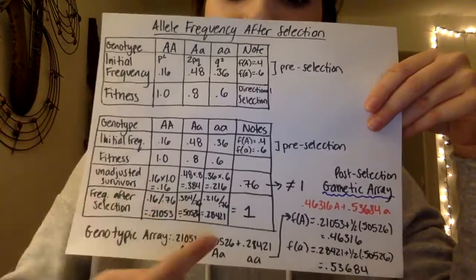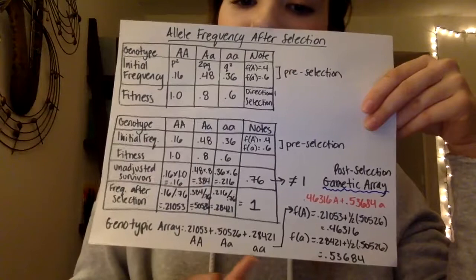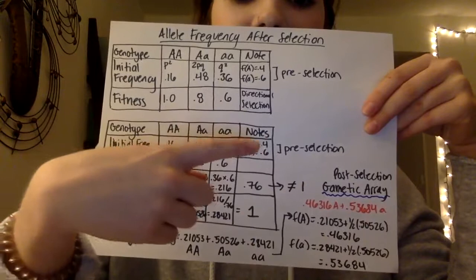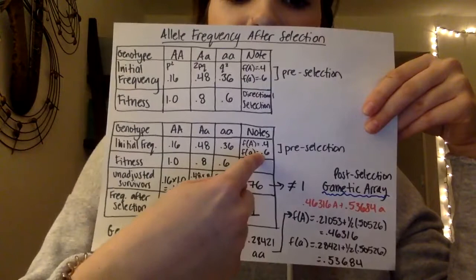Here was our new genotypic array, and here's our gametic array post-selection. We found that it increased with the big A and decreased with the little a, and here's our math for them.